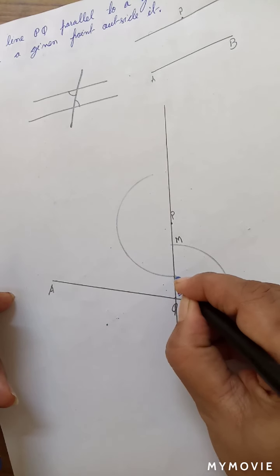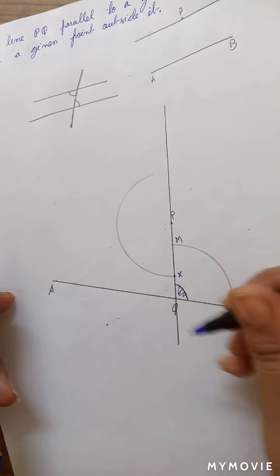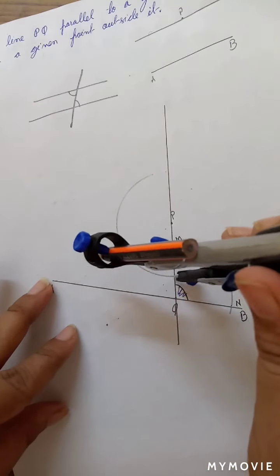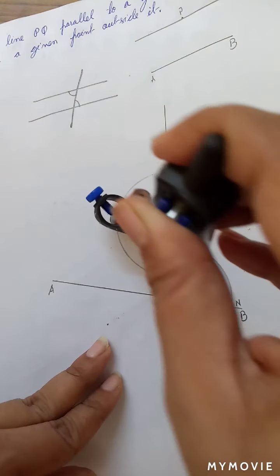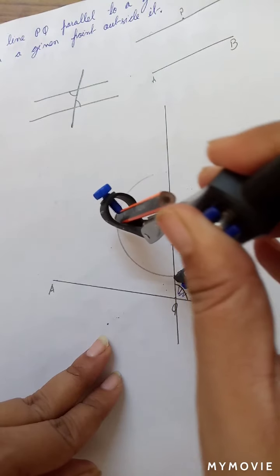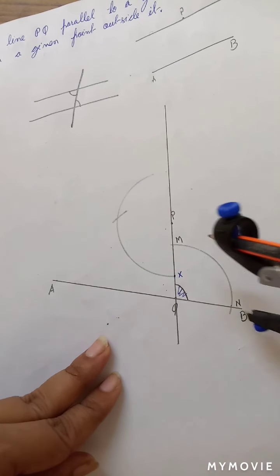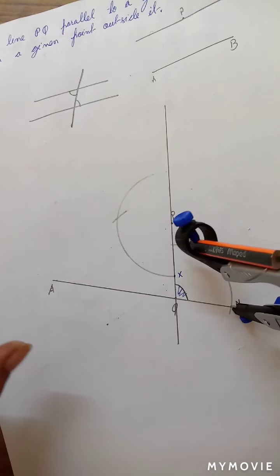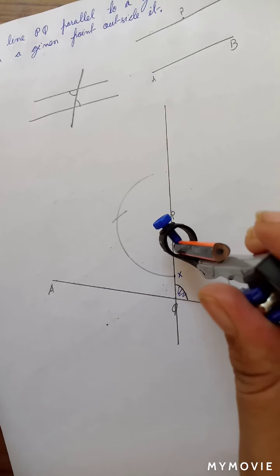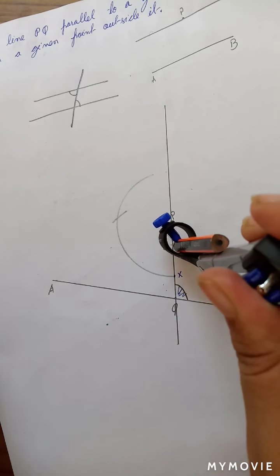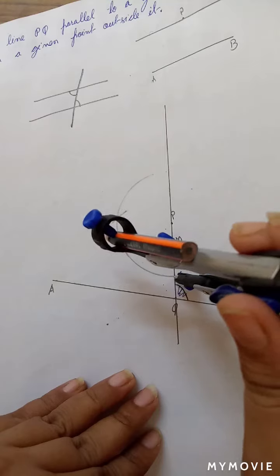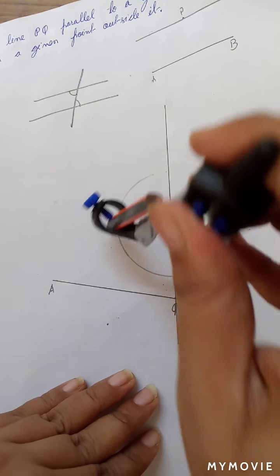And with X as center, cut an arc. Now, what we did? I repeat the process again. We took the measurement of this angle, and then, with X as center, we cut an arc.